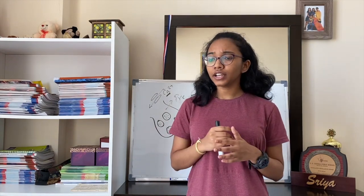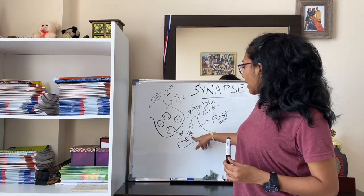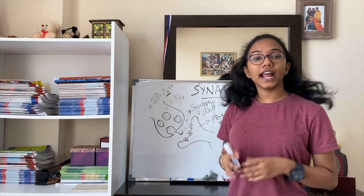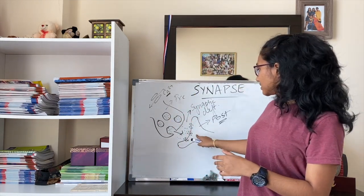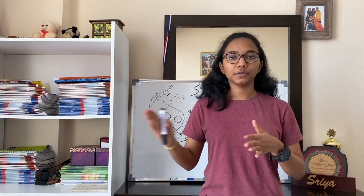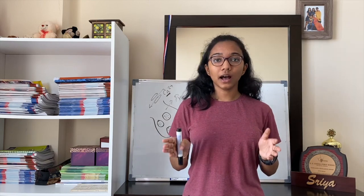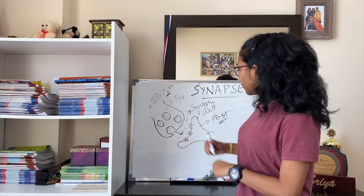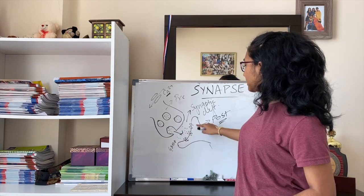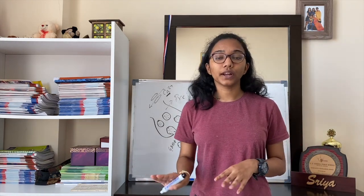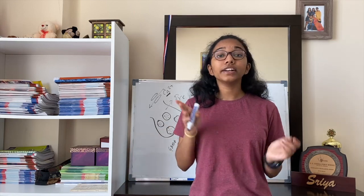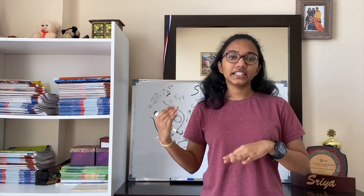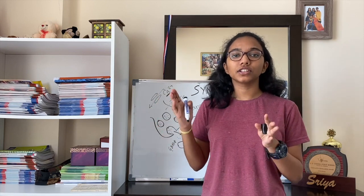There are two kinds of potentials: excitatory and inhibitory. For excitatory, take acetylcholine — it binds to the post-synaptic membrane, opens the sodium channel, and depolarizes the neuron, causing an action potential. But there is another neurotransmitter, GABA, which has inhibitory effects. When GABA binds to the post-synaptic membrane, sodium channels do not open; instead, chloride ion channels open, which hyperpolarize the neuron rather than depolarize it. So the action potential is not generated in the second neuron and the potential stops right there.